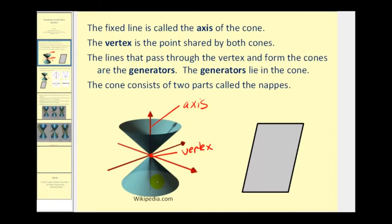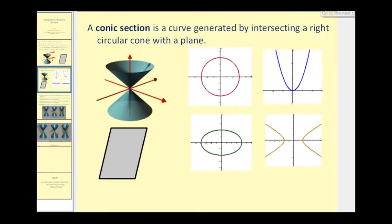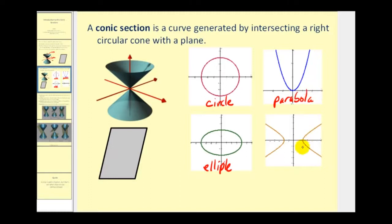The way we create the conic sections is to take a plane and intersect this double cone. Based upon how the double cone is sliced or intersected, it affects what conic section is formed. Let's take a look at the four non-degenerate conic sections. The first is the circle, as we see here in red. The next is the ellipse, which looks more like a flattened circle. In blue, we have the parabola, which you should already be familiar with. And then lastly, we have the hyperbola, which is a different shape than the parabola.